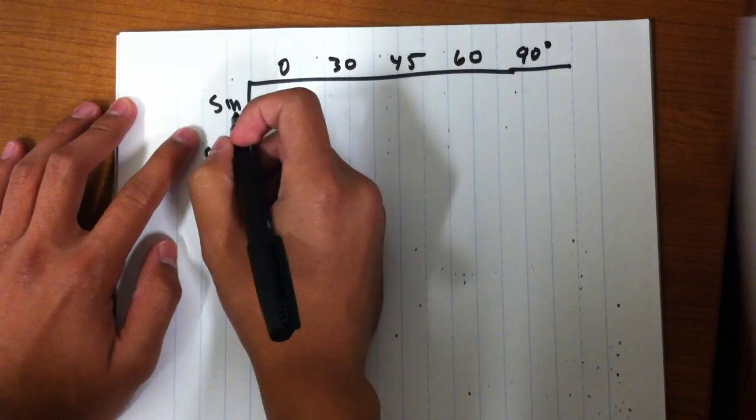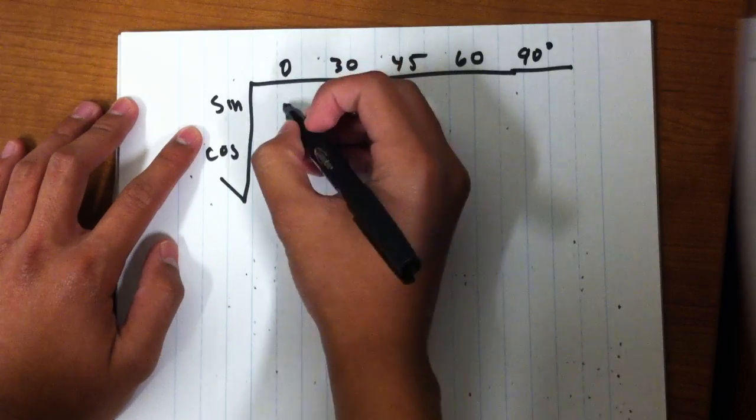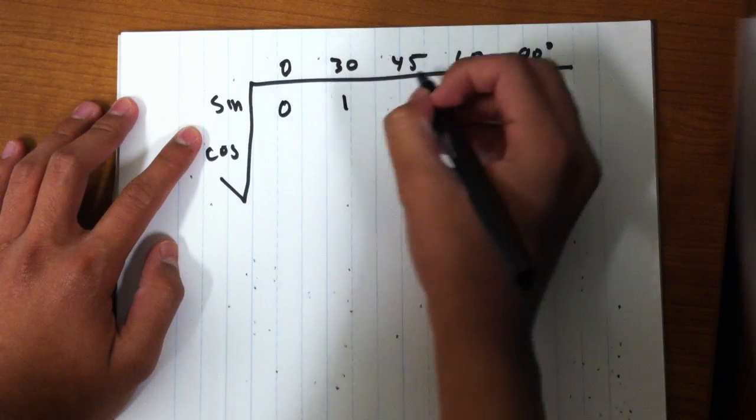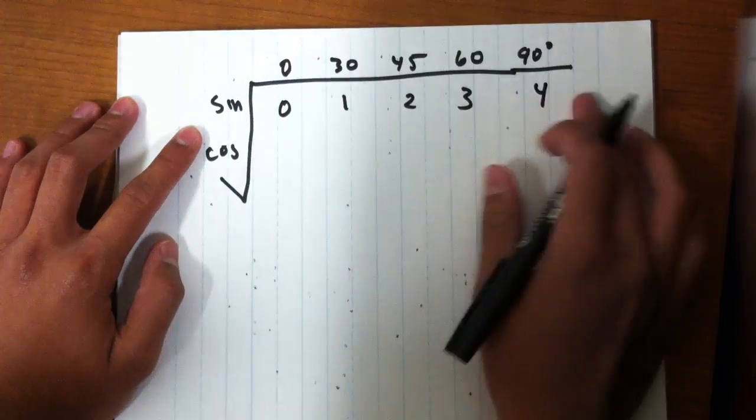After sine, you increment from 0 to 4 in increments of 1. So you start at 0, 1, 2, 3, 4. Make sure you align them so it's clear.